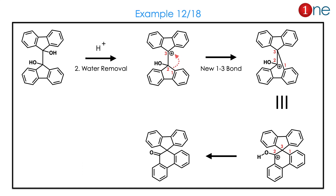Let us look at the next question. You have a connected symmetrical system with similar OH groups, so you can protonate anywhere. The system is rigid and the ring opens — the 5-membered becomes a 6-membered ring. The final product has a ketone. Don't get confused by ring size and larger molecules; just apply the concept.